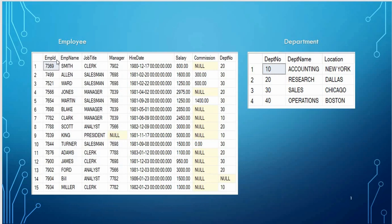We will fetch employee ID and employee name from the employee table, and department number and department name from the department table. You can see that the department number is a common column in both the employee table and department table — that is, there is a relationship between employee and department based on this department number.